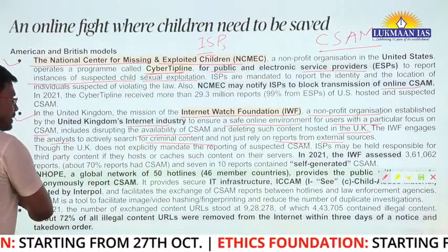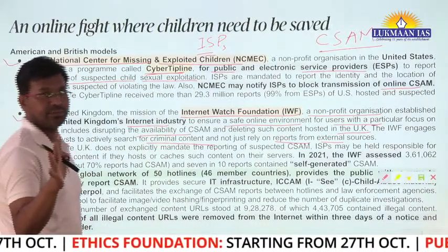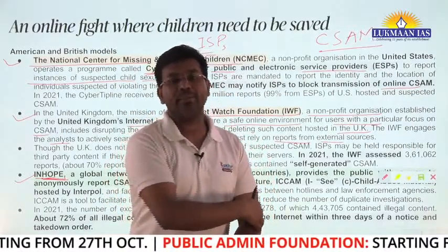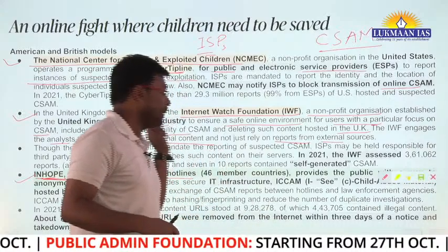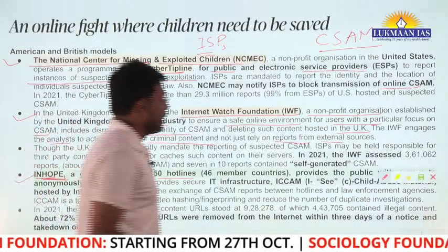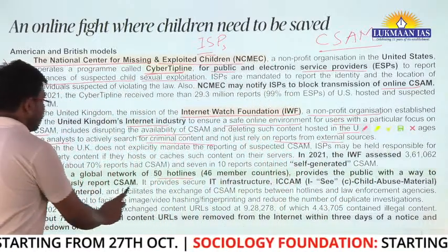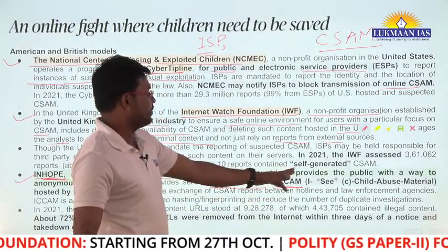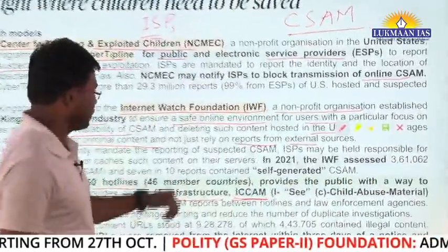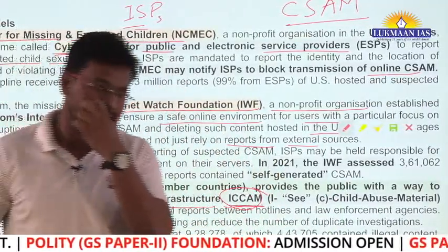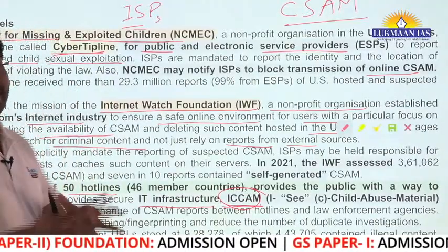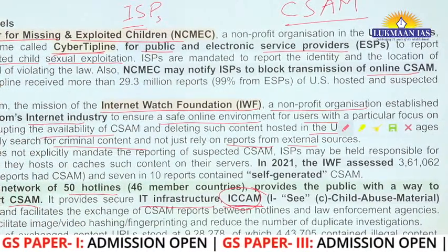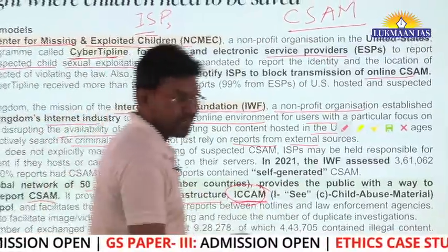Apart from this, there is an important agency called INHOPE — a global network of 50 hotlines with 46 member countries. It provides the public with a way to anonymously report CSAM and provides secure IT infrastructure called ICCAM (Image Child Sexual Abuse Material). INHOPE's member countries work together to remove CSAM from the internet space.